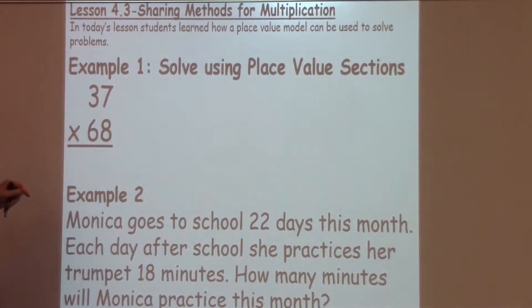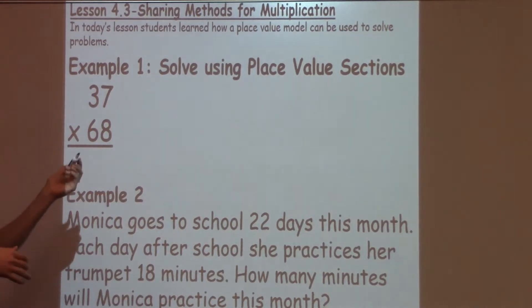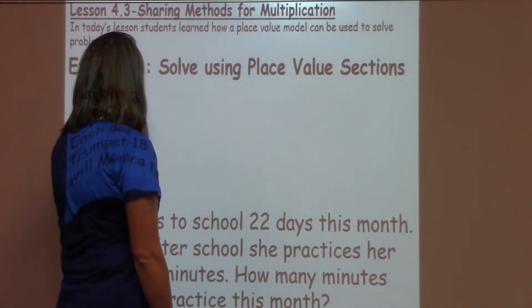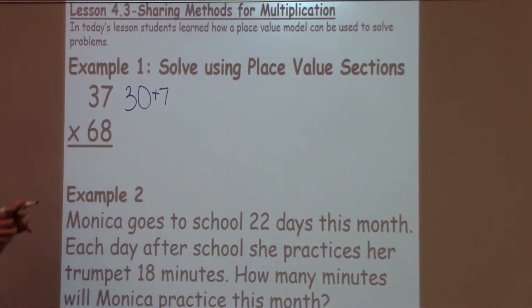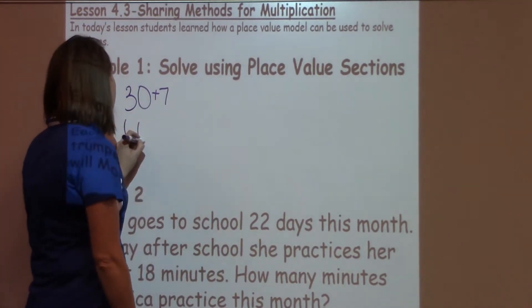One of the problems that we have is 37 times 68. We know 37, in expanded notation, is just 30 plus 7. We know 68 is really 60 plus 8.